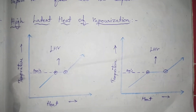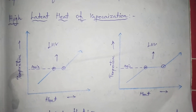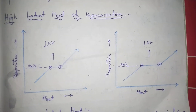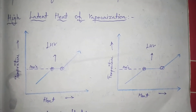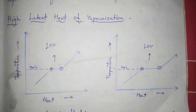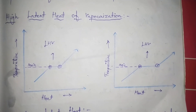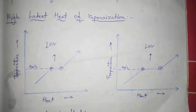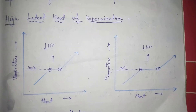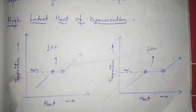What is high latent heat of vaporization? If we use a refrigerant, we need the latent heat of vaporization to be very high enough, so that any high heat can be absorbed by the refrigerant itself. We will talk about high latent heat of vaporization.